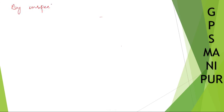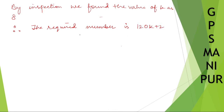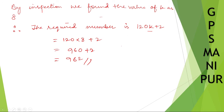By inspection, we found the value of k is 8. Therefore, the required number is 120k + 2 = 120 × 8 + 2 = 960 + 2 = 962. The answer is 962. Thank you so much, we will meet in the next video.